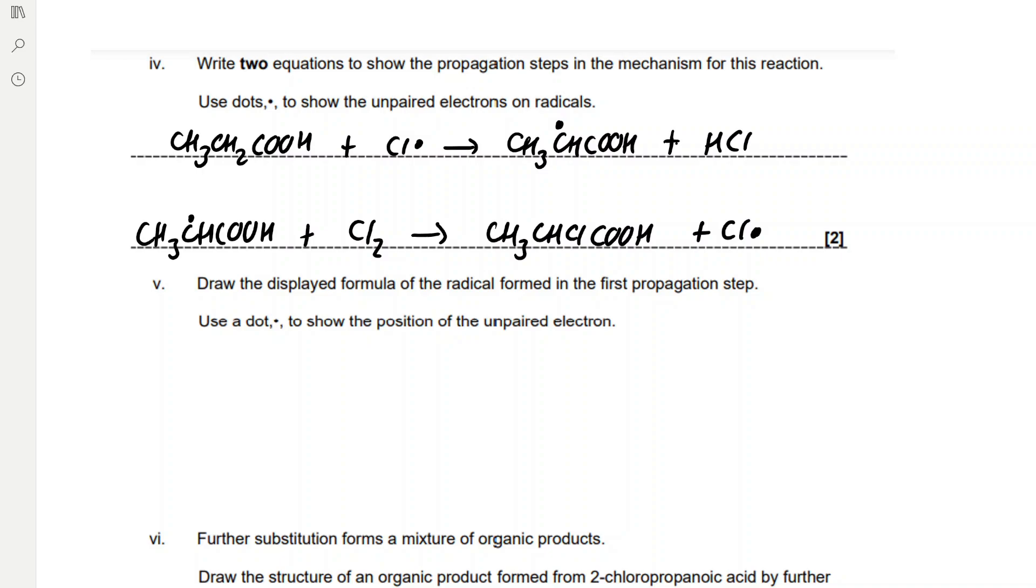Draw the displayed formula of the radical formed in the first propagation step. Use a dot to show the position of the unpaired electron. When we're drawing displayed formula we show all the atoms and the bonds, then draw our unpaired electron. We need to make sure our connectivity is good so none of these bonds can go anywhere other than to the correct atoms.